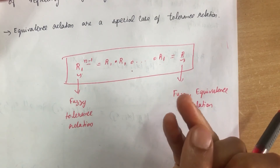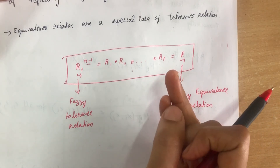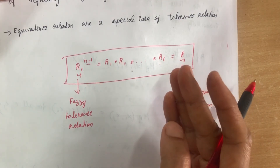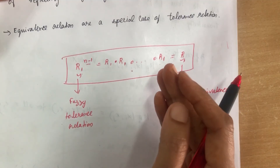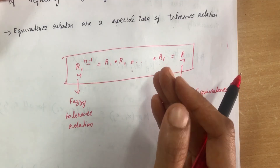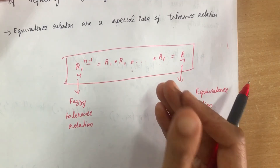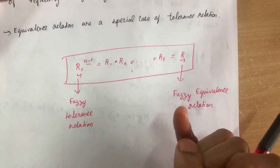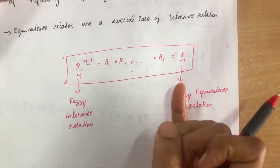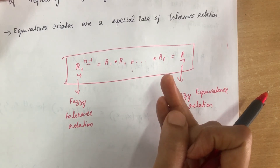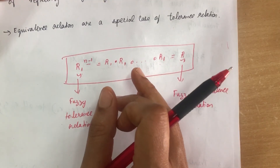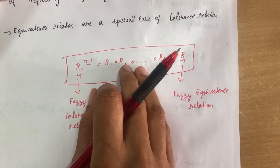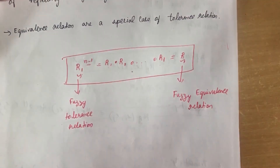In today's video I have taught you about fuzzy relations, fuzzy Cartesian product, fuzzy operations, fuzzy composition, classical equivalence relation, classical tolerance relation, fuzzy equivalence relation, and fuzzy tolerance relation. I hope you all learned these topics well. Thank you all for watching.